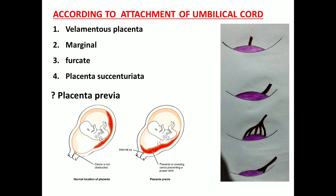Placenta previa means the position of the placenta is at an abnormal site — the placenta is not in the normal position. Such varieties are called placenta previa. In placenta previa, the placenta is shifted towards the lower uterine segment. There are various types of placenta previa depending on the degree of displacement.